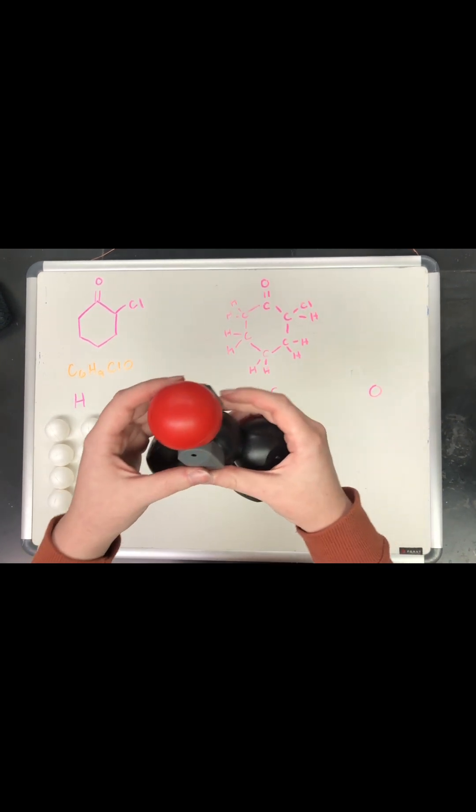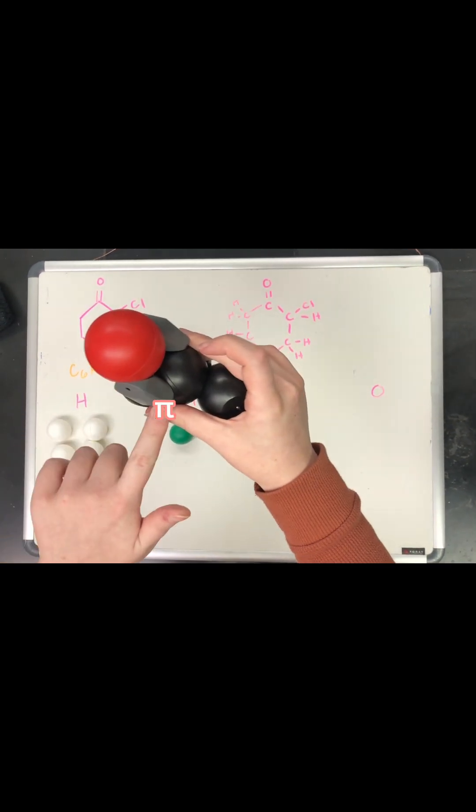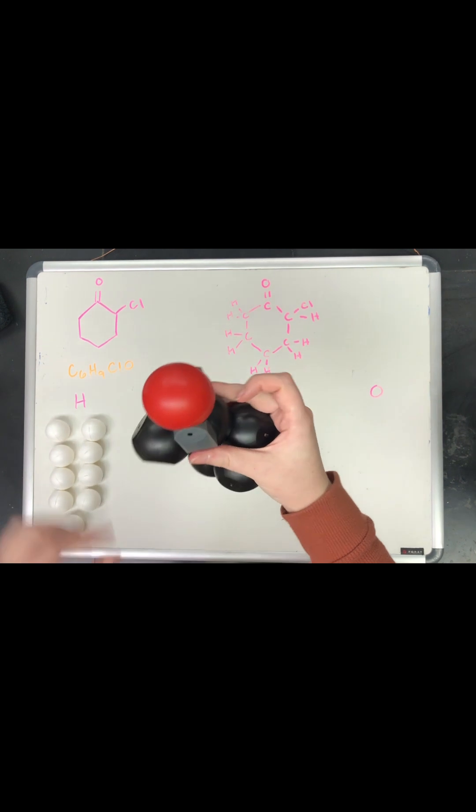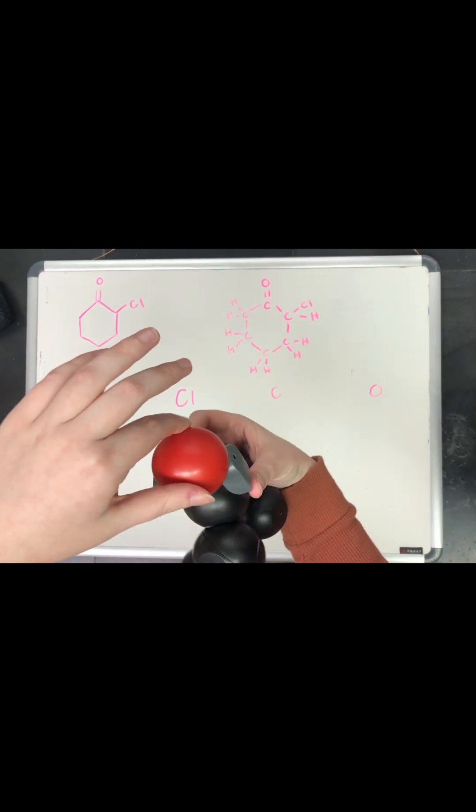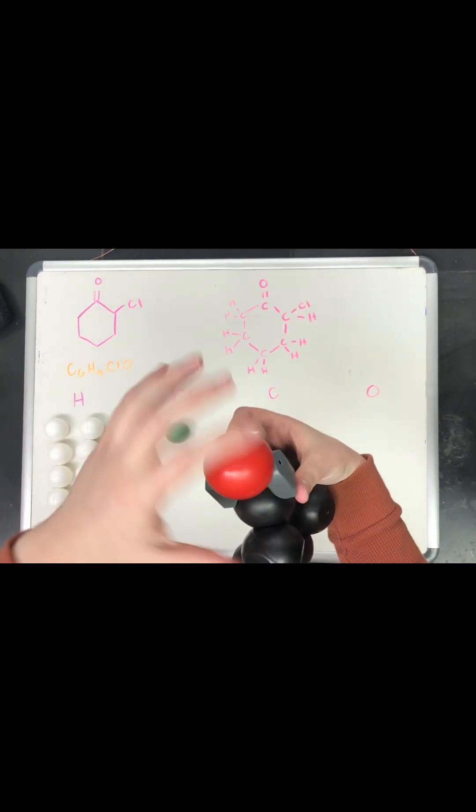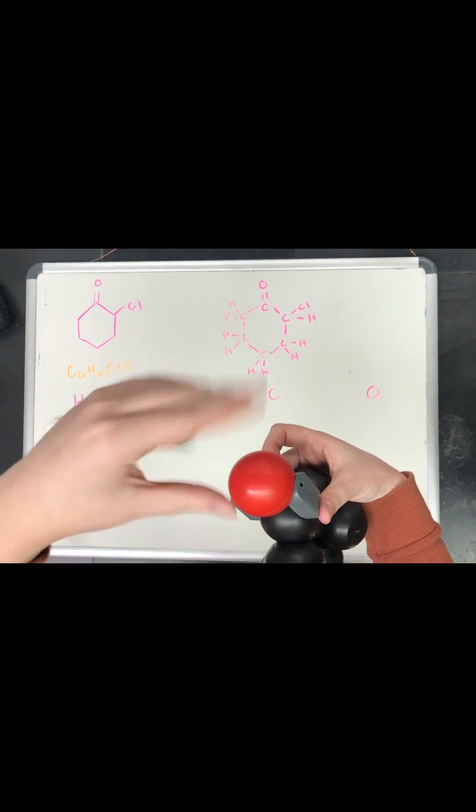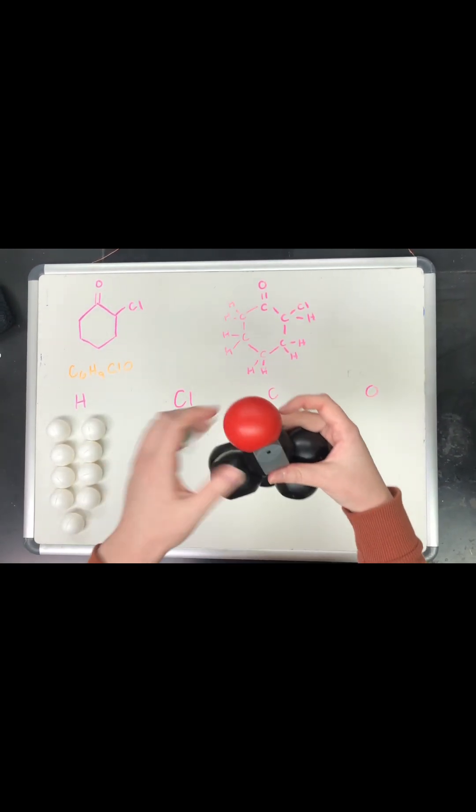All right, so the oxygen fits on like this. Since it's making one, two bonds, that fulfills what is needed for this oxygen. So it doesn't have any more valence electrons that need to bond to something else. So this oxygen is good.